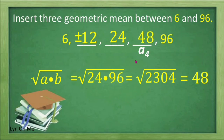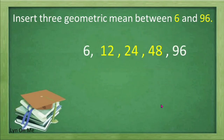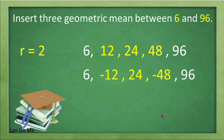Recalling that the geometric mean between two given numbers can be positive and negative. For the fourth term, we find the geometric mean between 24 and 96: the square root of 24 times 96 equals the square root of 2304, which equals 48. So the fourth term is 48, and our sequence is 6, 12, 24, 48, 96. The common ratio r is equal to 2, because 12 divided by 6 is 2, or 24 divided by 12 is still 2. The second sequence is 6, negative 12, 24, negative 48, 96, with r equal to negative 2, because negative 12 divided by 6 equals negative 2, or 24 divided by negative 12 is still negative 2.